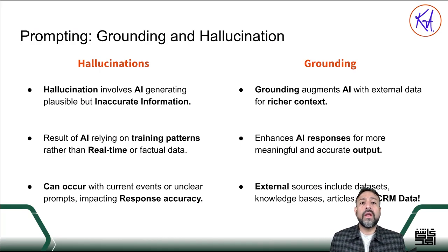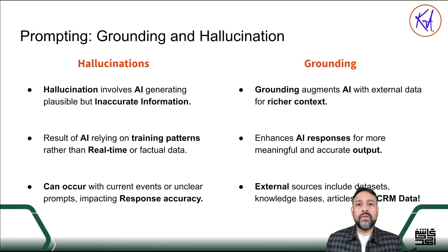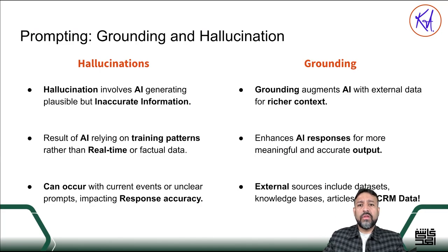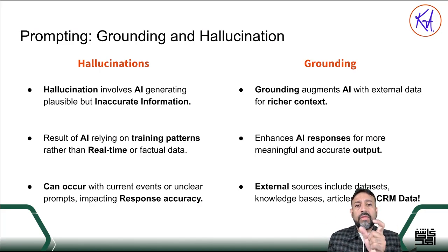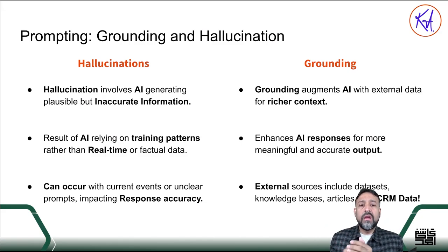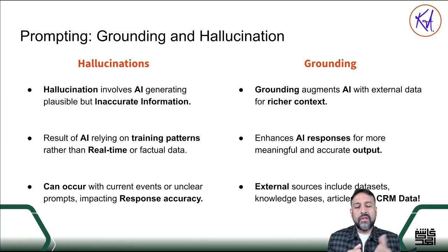Hallucination involves AI generating a response that sounds very plausible, but may contain inaccurate information. We always have to make sure the information is accurate. There was an example where a lawyer actually submitted a case to a judge that referenced a lot of past cases — which were not real. The AI just made them up. That's why you still need to verify the facts. Also, each language model is trained on certain data, so if you ask about very recent events, it may not provide a good response.